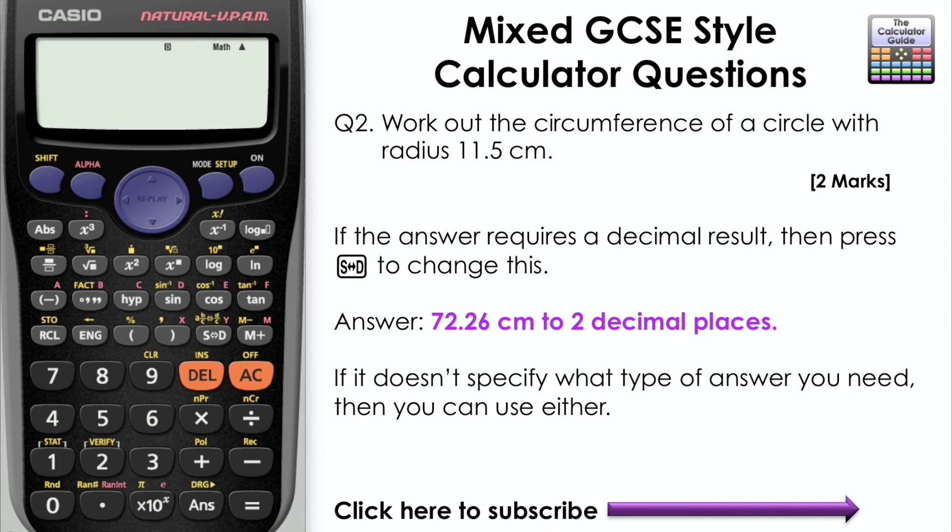If it doesn't specify what type of answer you need, then you can use either in terms of pi or a decimal answer.